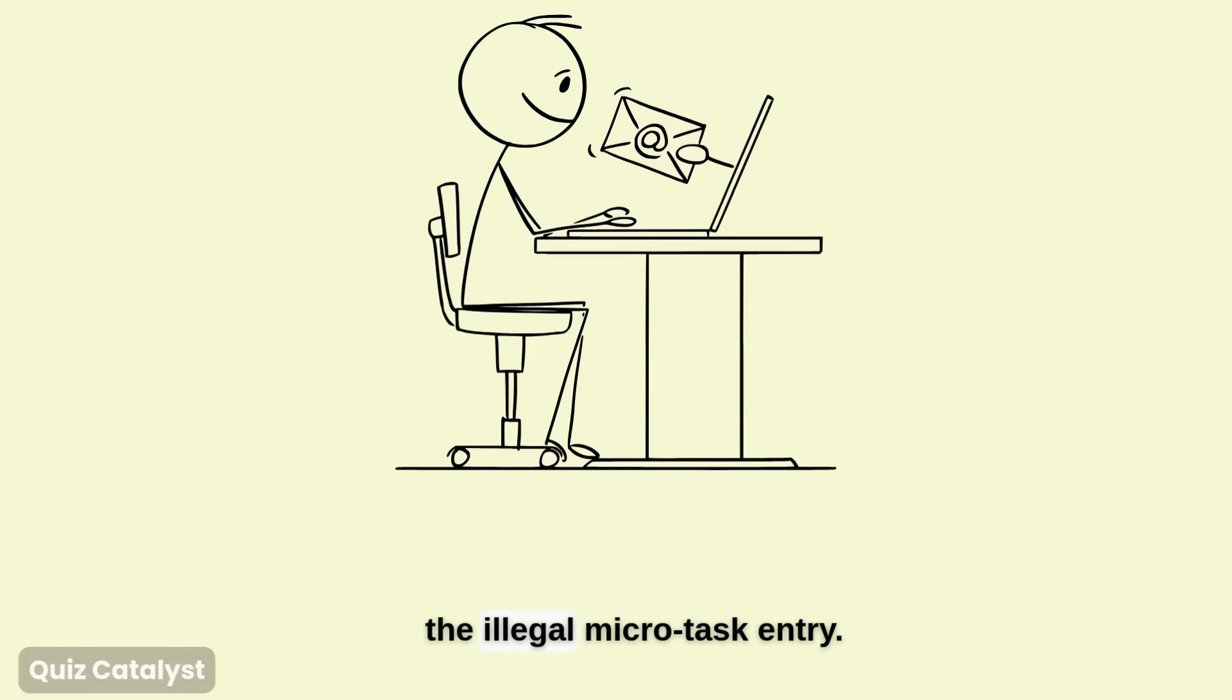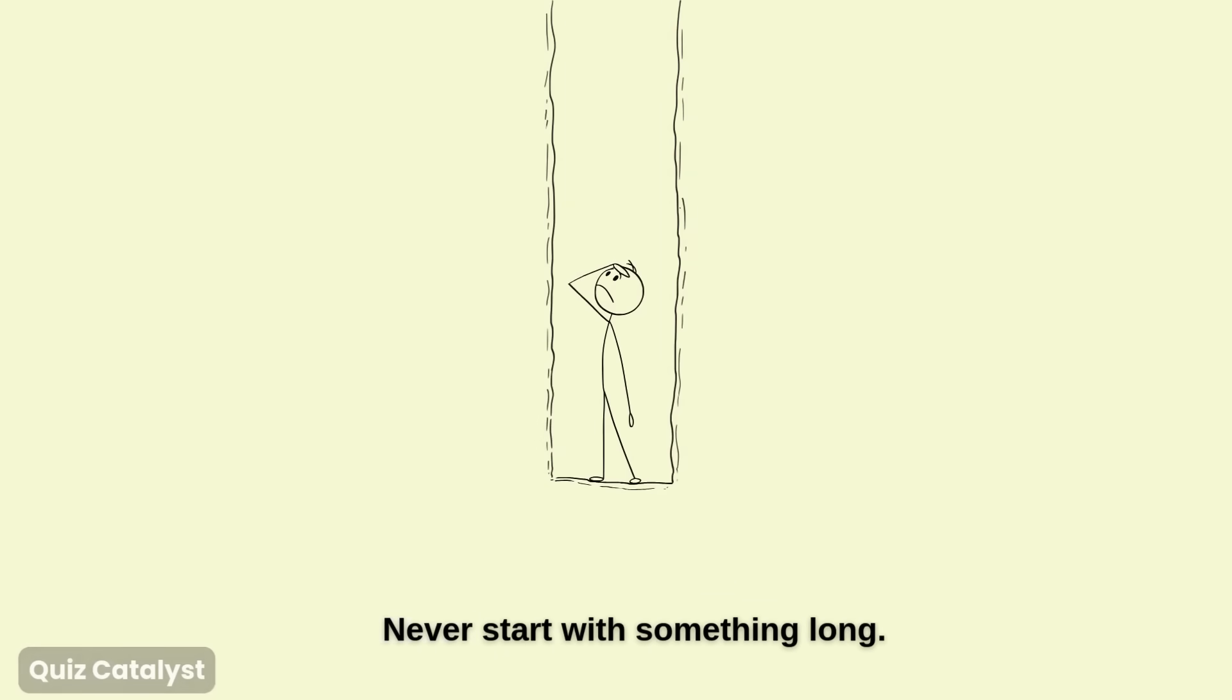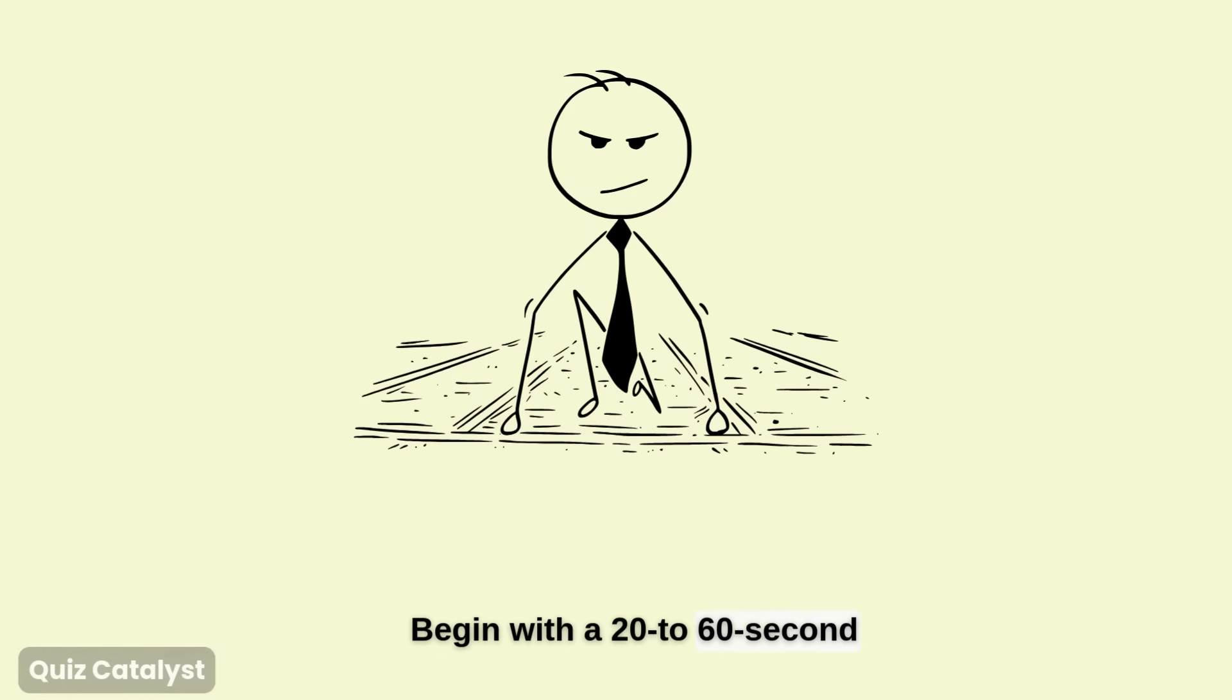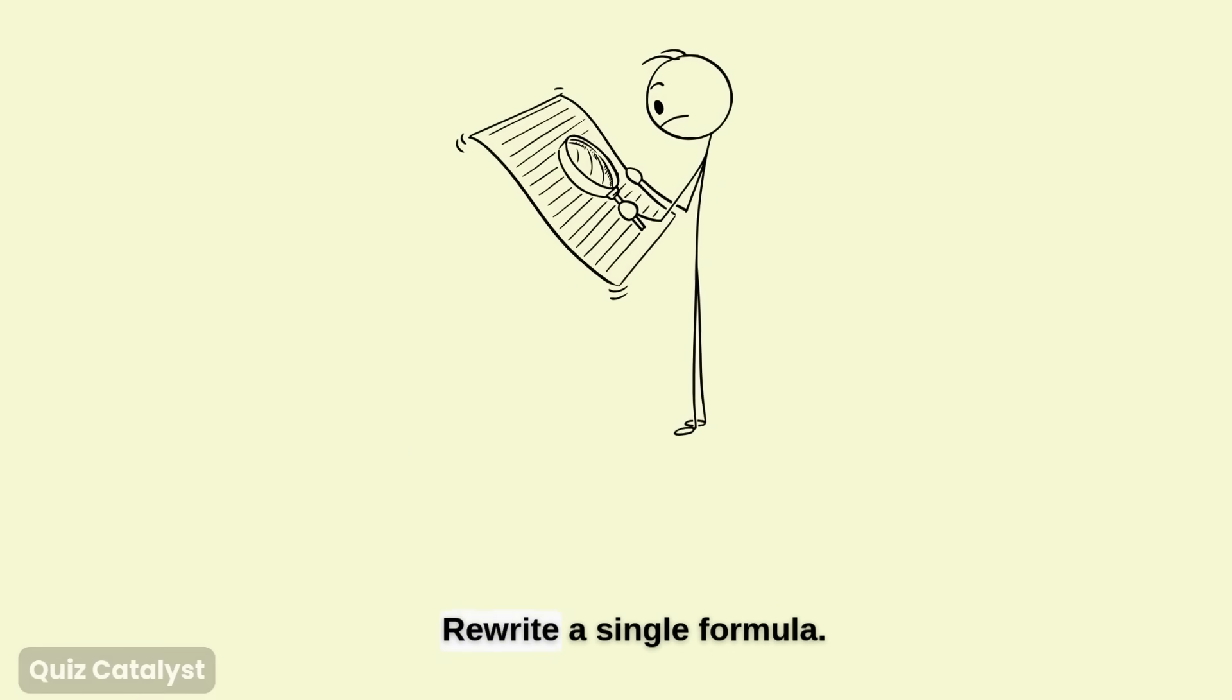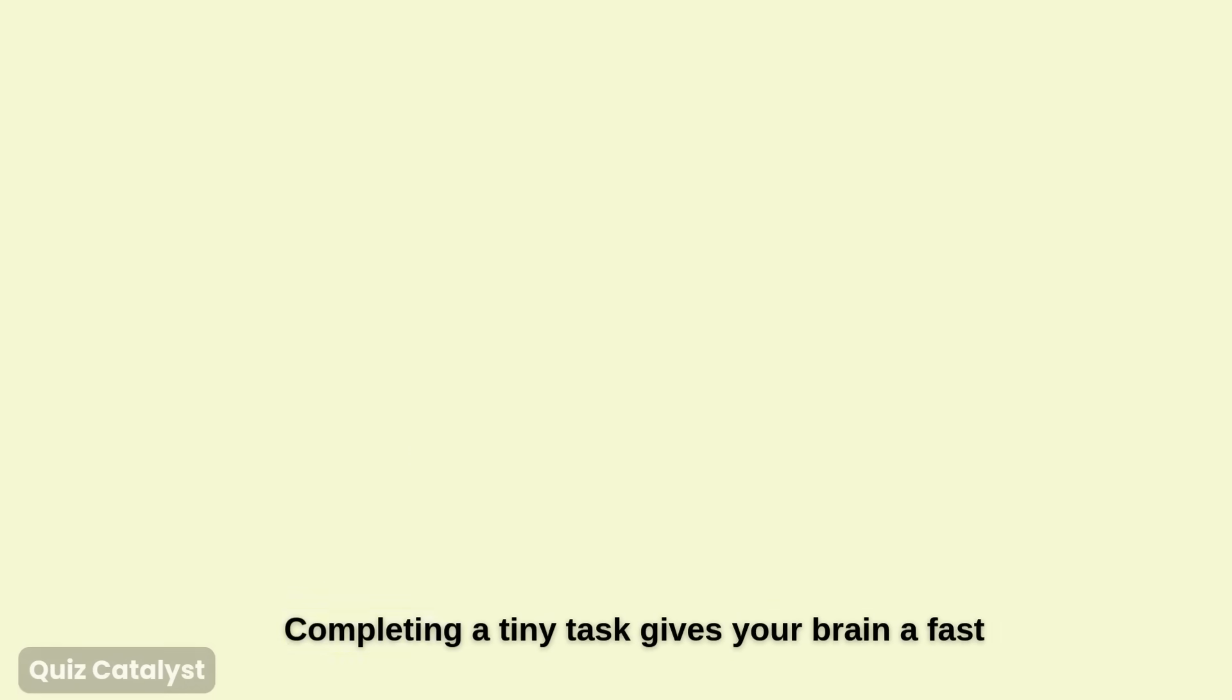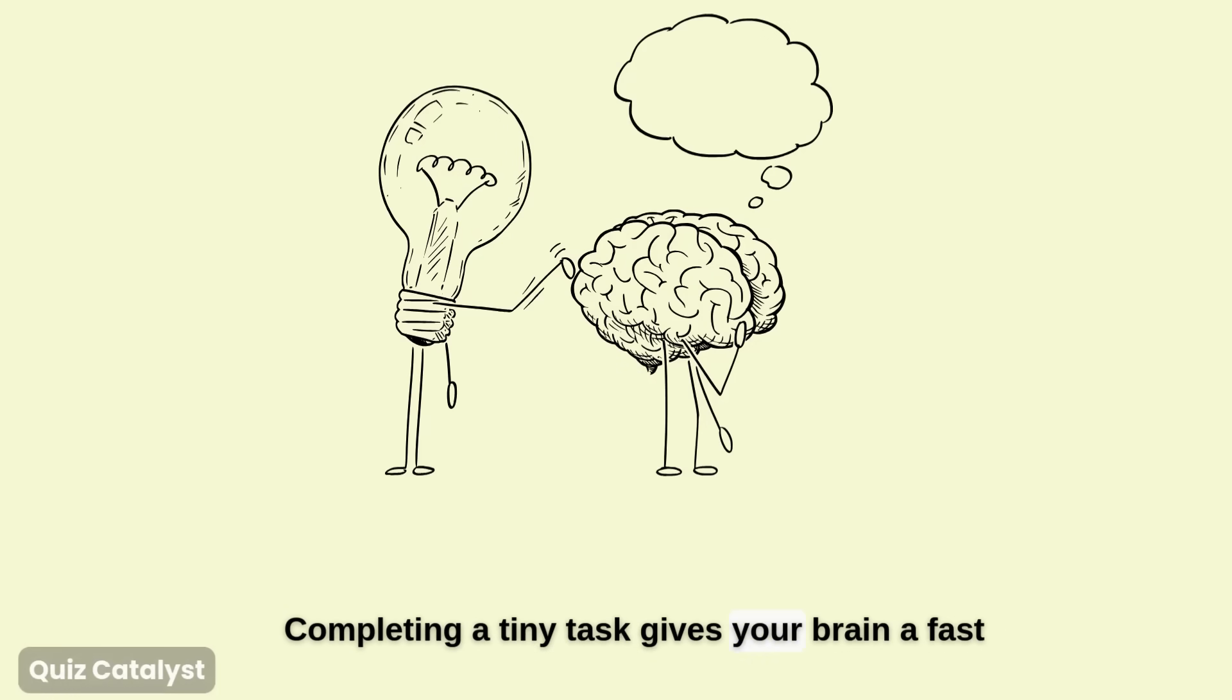Step three, the illegal micro-task entry. Never start with something hard. Never start with something long. Begin with a 20 to 60-second micro-task. Write the title of the chapter. Solve one super easy question. Read a few lines. Rewrite a single formula. Highlight a paragraph.